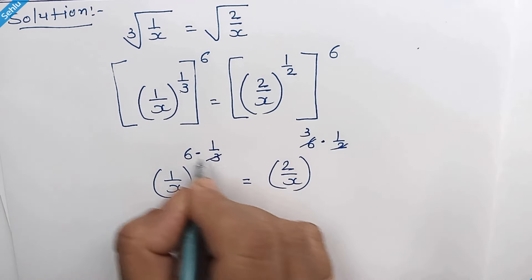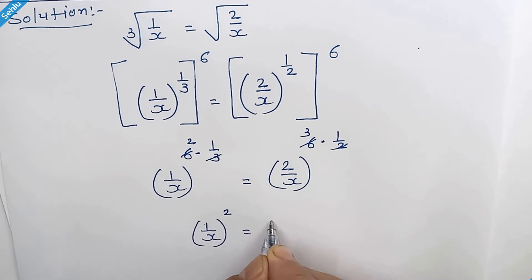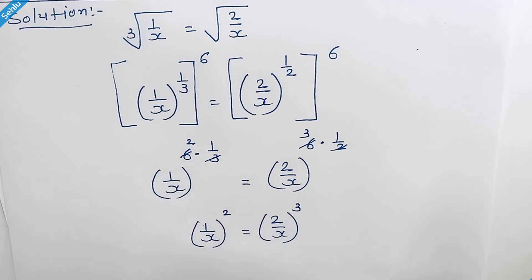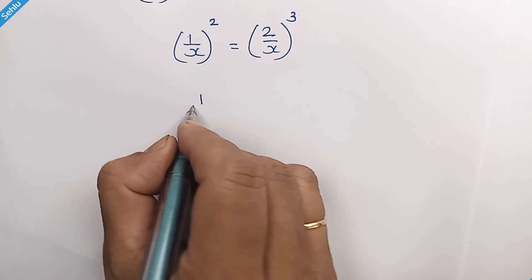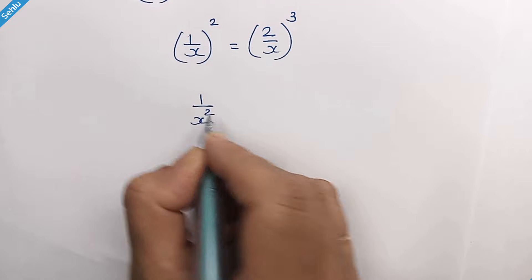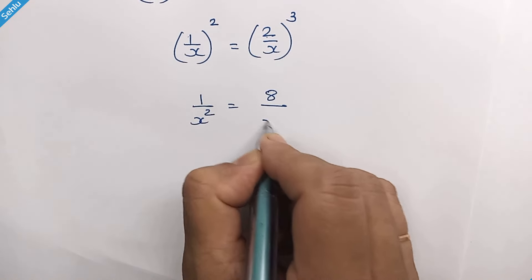Here we have 3 and here we have 2. Let's open the brackets. So it will be 1 over x square is equal to 2 cube is 8 over x cube.